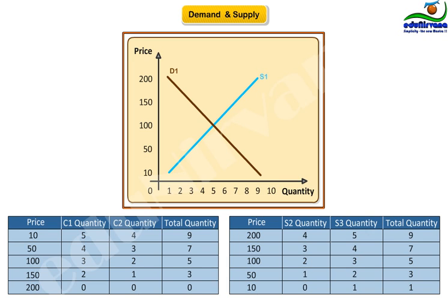As you can see, demand and supply curves are intersecting each other at a price point of $100 and a quantity of 5 units of fans.